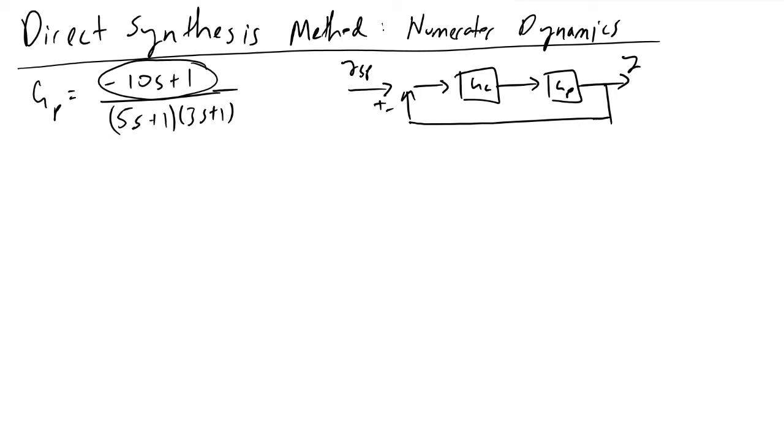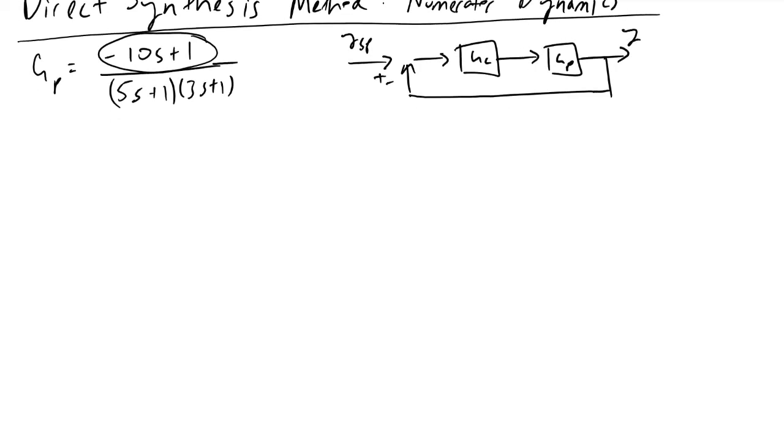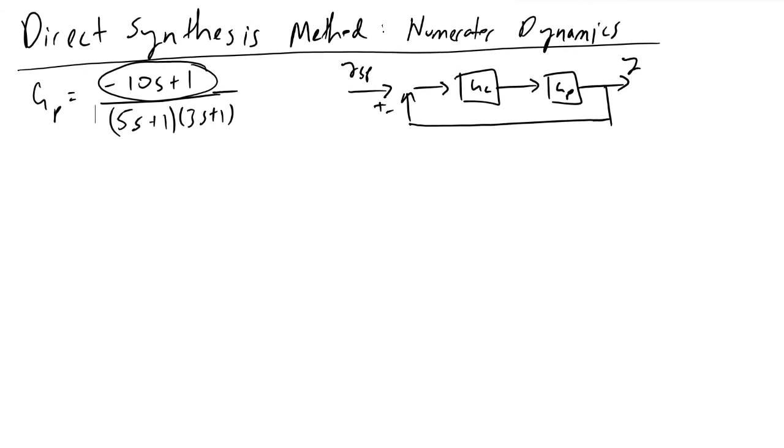To start off, we're going to approach this like we have before with direct synthesis, in which we're going to look at our closed loop transfer function which is here and we want to essentially obtain some kind of desired behavior.